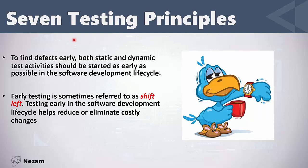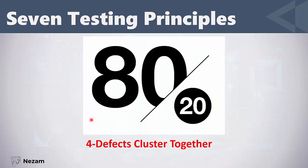Early testing is sometimes referred to as 'shift left,' because we shift the testing to the beginning of the project — to the left side. This shift-left approach reduces the costly changes that would otherwise cost a lot of money. Principle number four is: defects cluster together, written as the 80/20 rule.